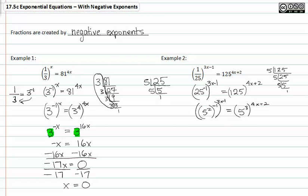Now that we have matching bases, I'm going to multiply my exponents together. This is going to give me 5 to the negative 2 raised to the 3x minus 1, and that's equal to 5, and then distributing that 3 through to the 12x plus 6.